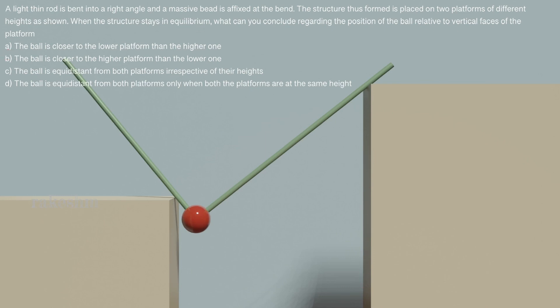The first option says the ball is closer to the lower platform than the higher one. Next, the ball is closer to the higher platform than the lower one. The next option: the ball is equidistant from both platforms irrespective of their heights. And the last: the ball is equidistant from both platforms only when both the platforms are at the same height.